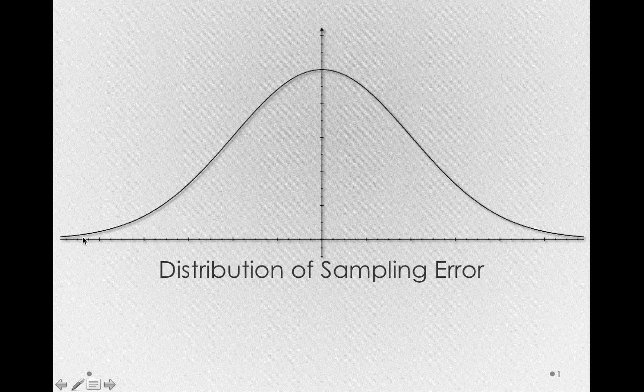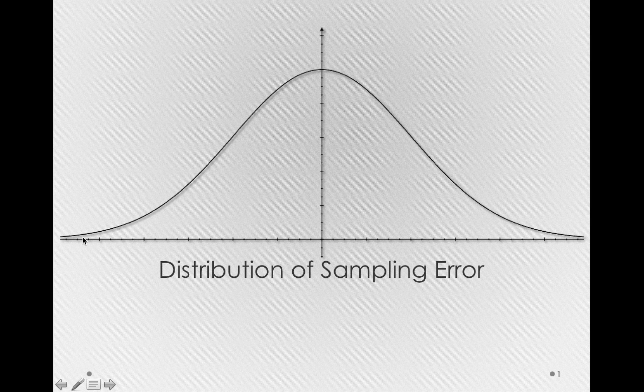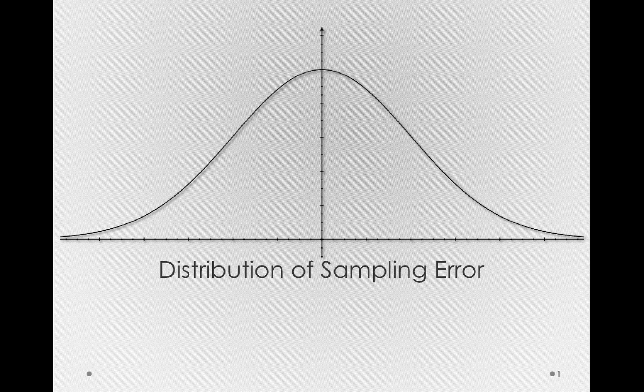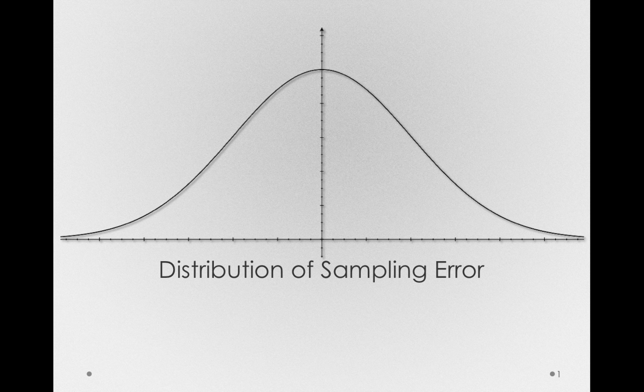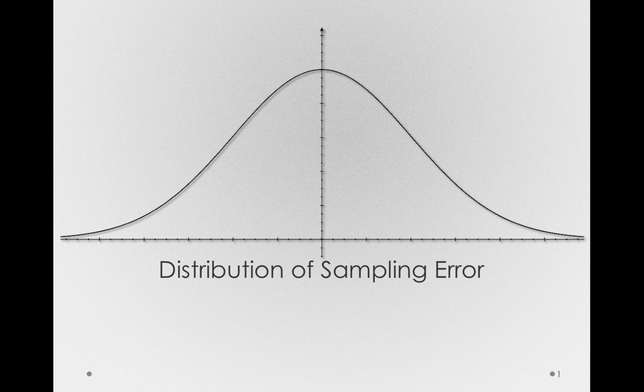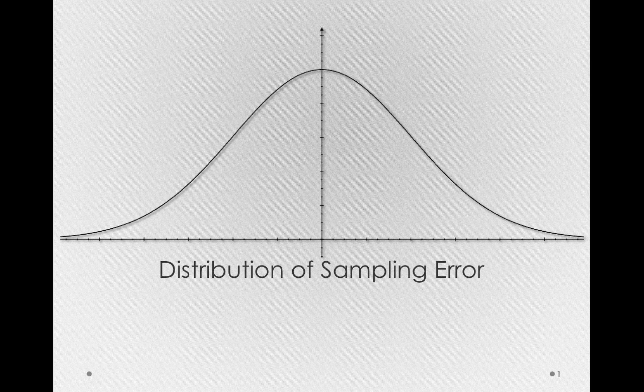Notice what that might imply. Suppose we were doing a study looking at the effects of some drug on IQ. We know a lot about the IQ distribution, and we should expect, if we simply were to take a sample, that the IQ scores in our sample would average out to be about 100.